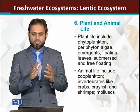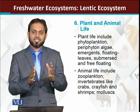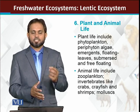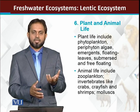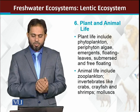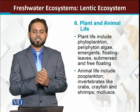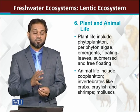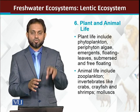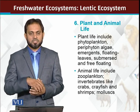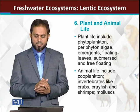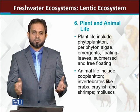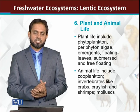As for animal life in lentic ecosystems: there are different types of zooplanktons, just as there are phytoplanktons. Algae are phytoplanktons. Similarly, small unicellular organisms — mainly protozoans — are the zooplanktons. There are also different types of invertebrates, including insects and worms which inhabit the benthic zone, as well as crabs, crayfish, shrimps, and molluscs. Different types of animals are surviving in the lentic ecosystem.